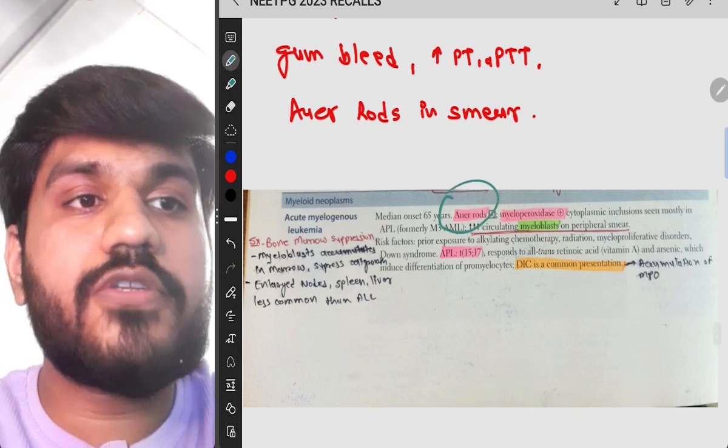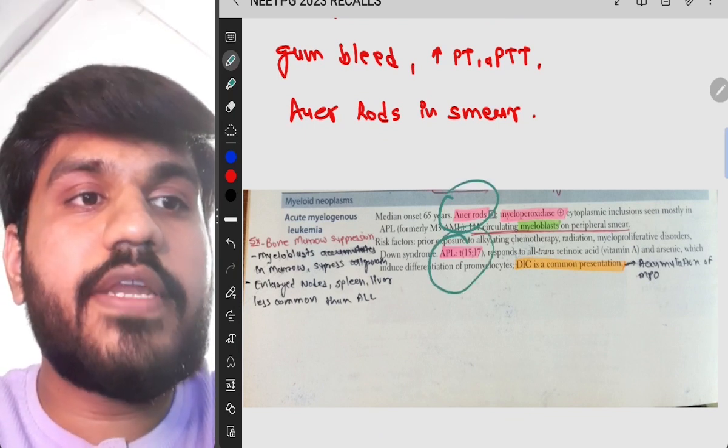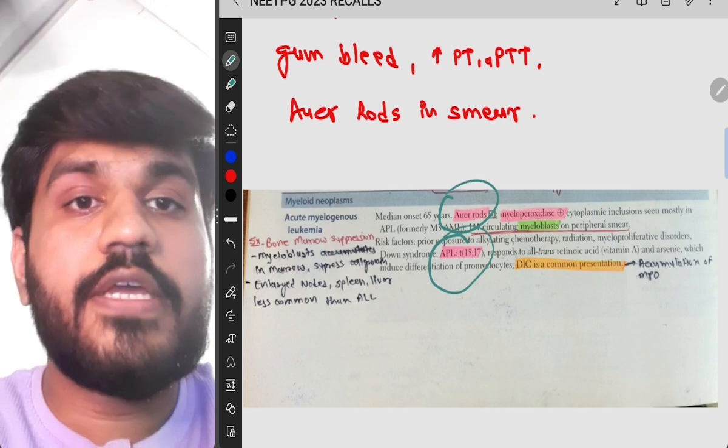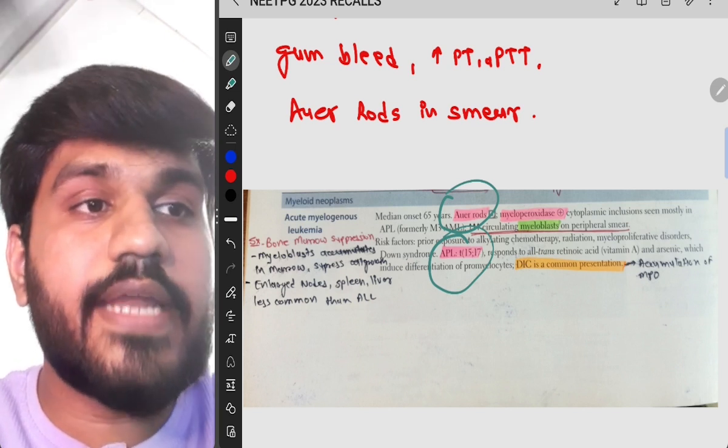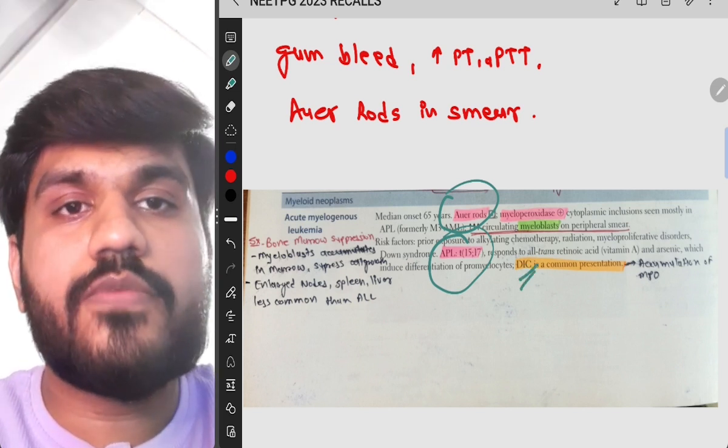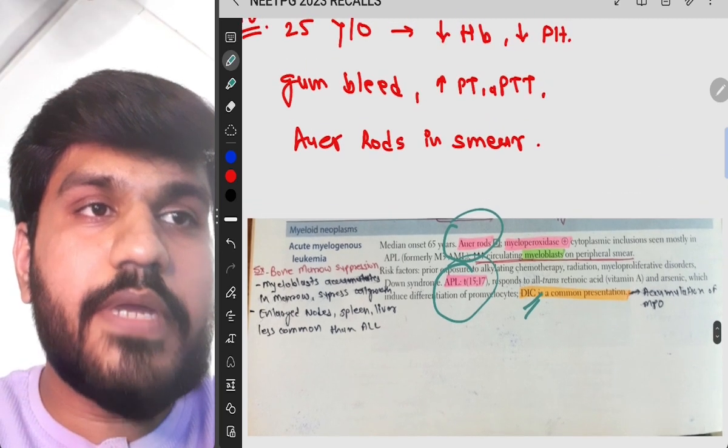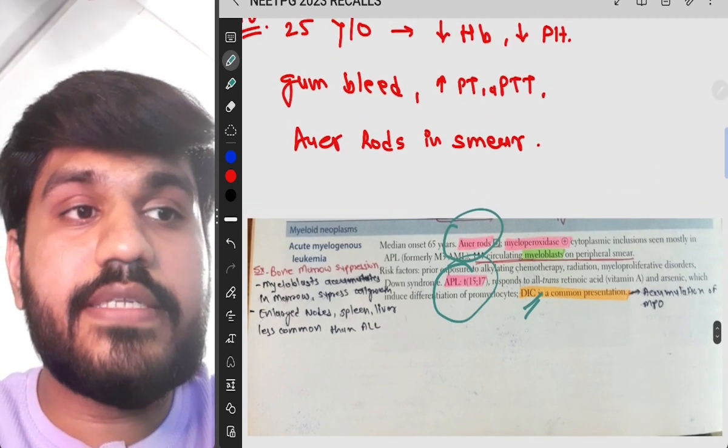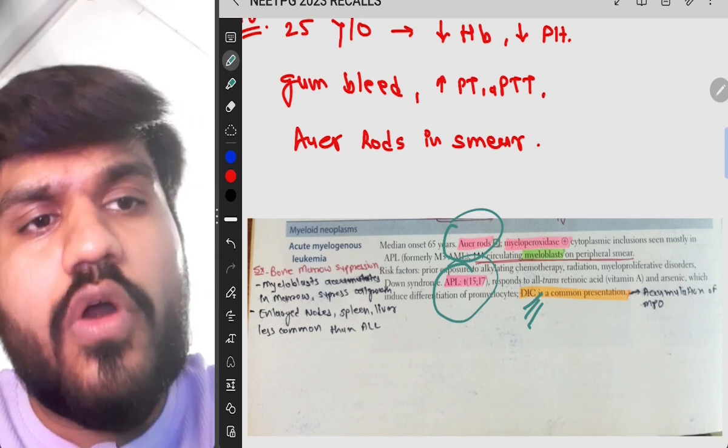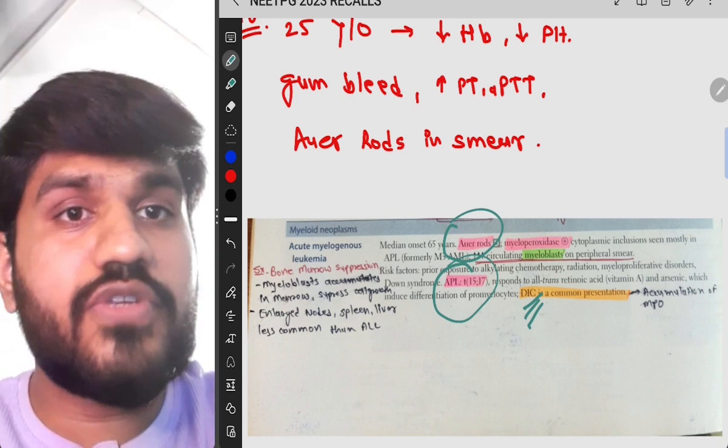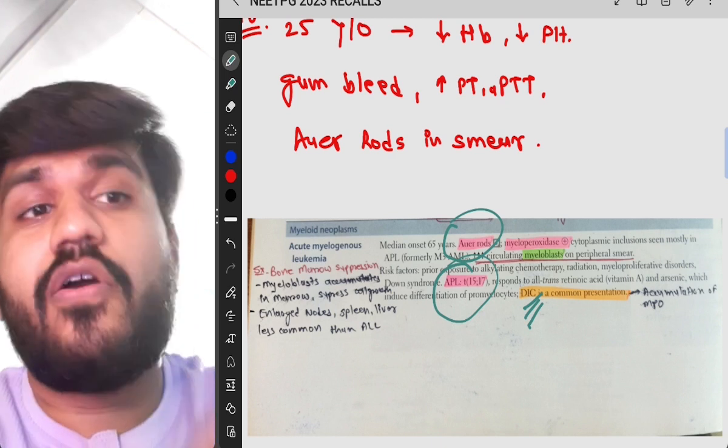First sentence is Auer rod cells, also translocation of 15 and 17. They have also given the translocation of the 15 and 17. And there are DIC like symptoms also. So increase in APTT, increase in PT, decrease in platelet count is DIC like symptoms. So all the things are given in First Aid. You just have to memorize it or you have to understand the concepts.